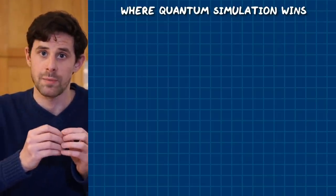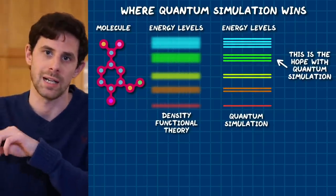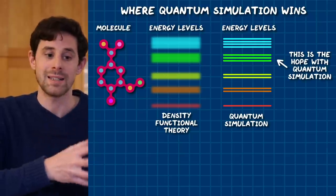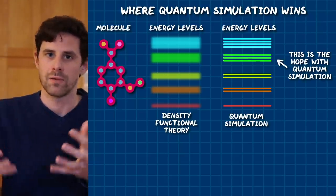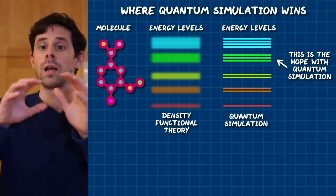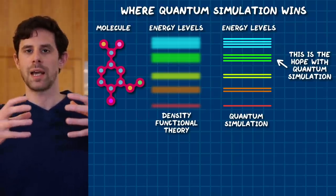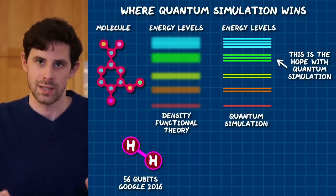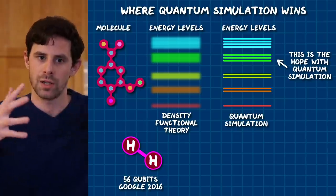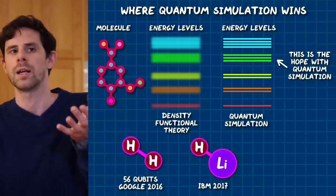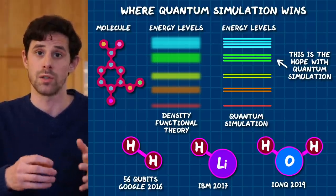The real potential for quantum simulators is to solve those problems where approximate techniques fail — such as problems where even a small error in calculating energy levels of a molecule leads to big errors in the rate of a chemical reaction, or in superconductors where the whole behavior depends on the precise interaction between an electron and an atom. In general for chemistry simulations you need one qubit for each electron orbital, so to perfectly simulate hydrogen you'd need 56 qubits, which Google did in 2016. In 2017 IBM simulated lithium hydride and beryllium hydride, and in 2019 IonQ managed to simulate water using a trapped ion system.